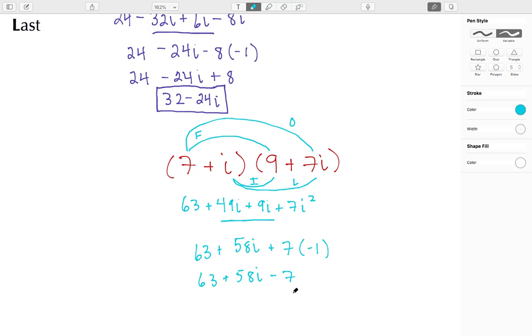So here we're going to do 63 minus 7. Well, 63 minus 3 is going to be 60, and then 60 minus 4 to give me 56. So this here is 56 plus 58i, and that's the result of applying the FOIL method to both of these complex binomials.